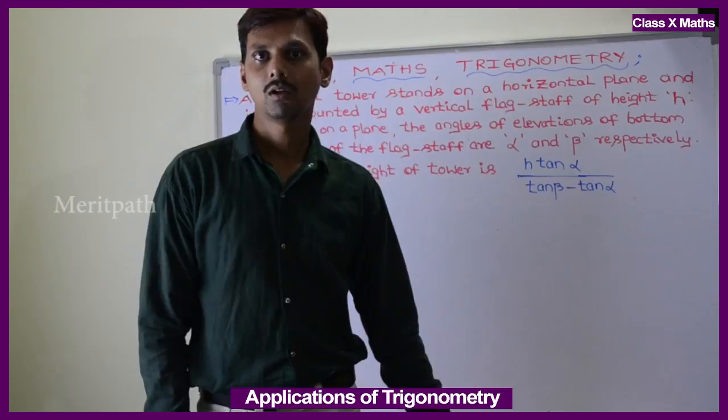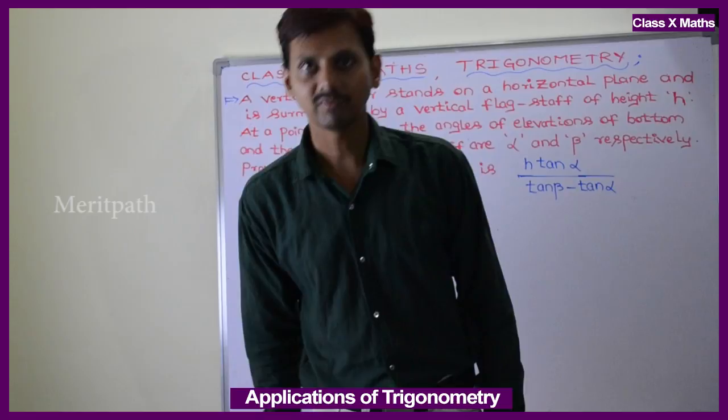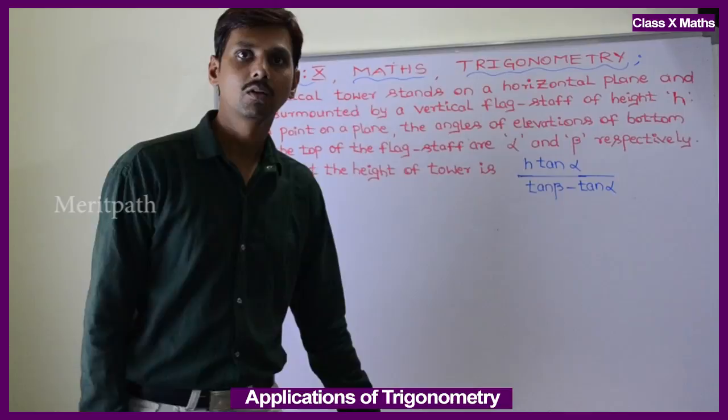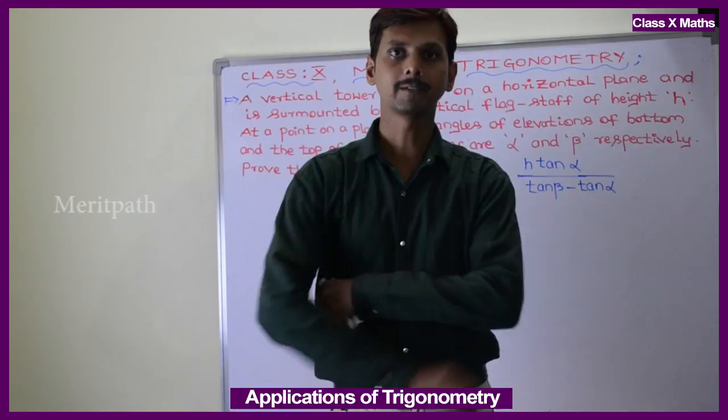A vertical tower stands on a horizontal plane. On the vertical tower there is a flagstaff. The angle of elevation of the bottom and the top of the flagstaff makes angles alpha and beta. We need to find out the height of the flagstaff, which is H·tan α / (tan β − tan α).